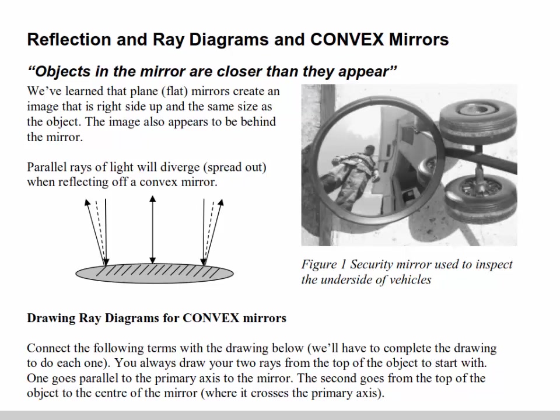Convex mirrors surround us in everyday life. We see them when we get onto a bus - they're often a small circular mirror with a really big field of view. You see them in small convenience stores for security purposes. Parking garages and hospitals will often have them in tight corners so we can see what's coming up ahead. The most common one is probably 'objects in the mirror are closer than they appear' written at the bottom of the passenger side mirror in your average car.